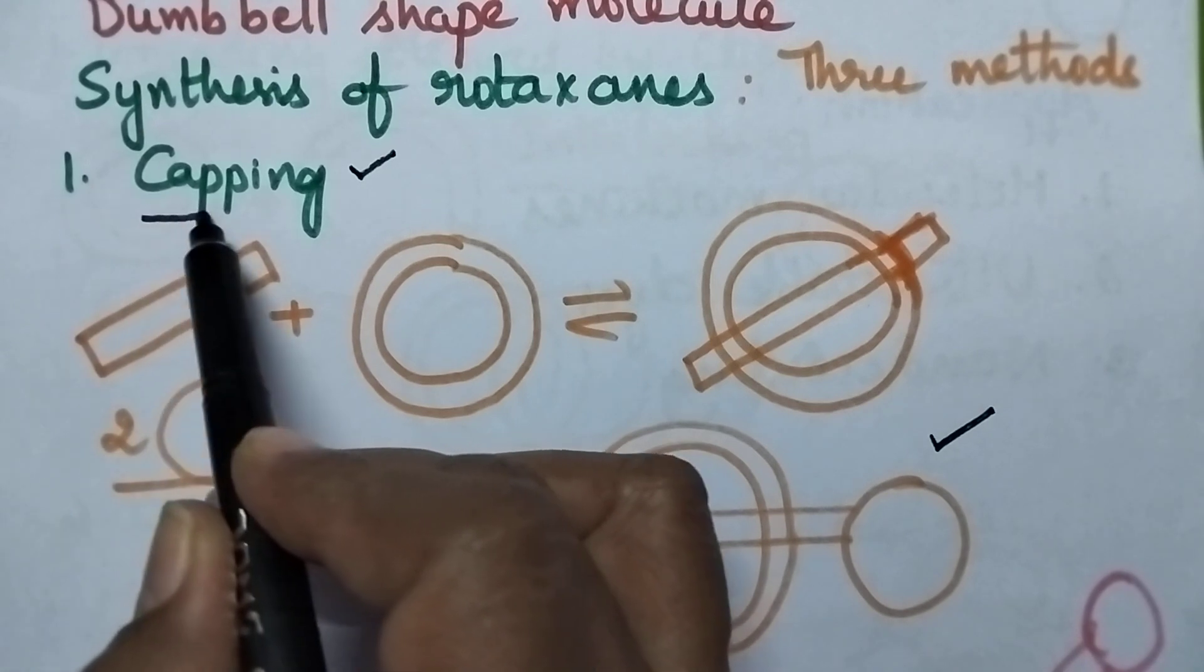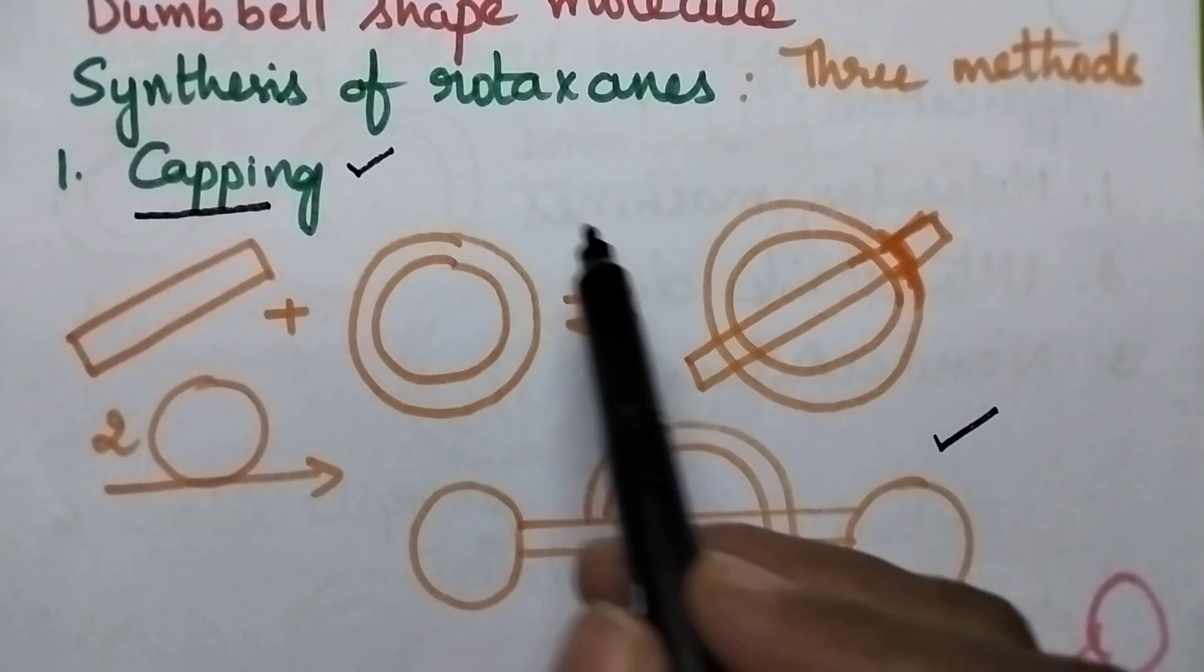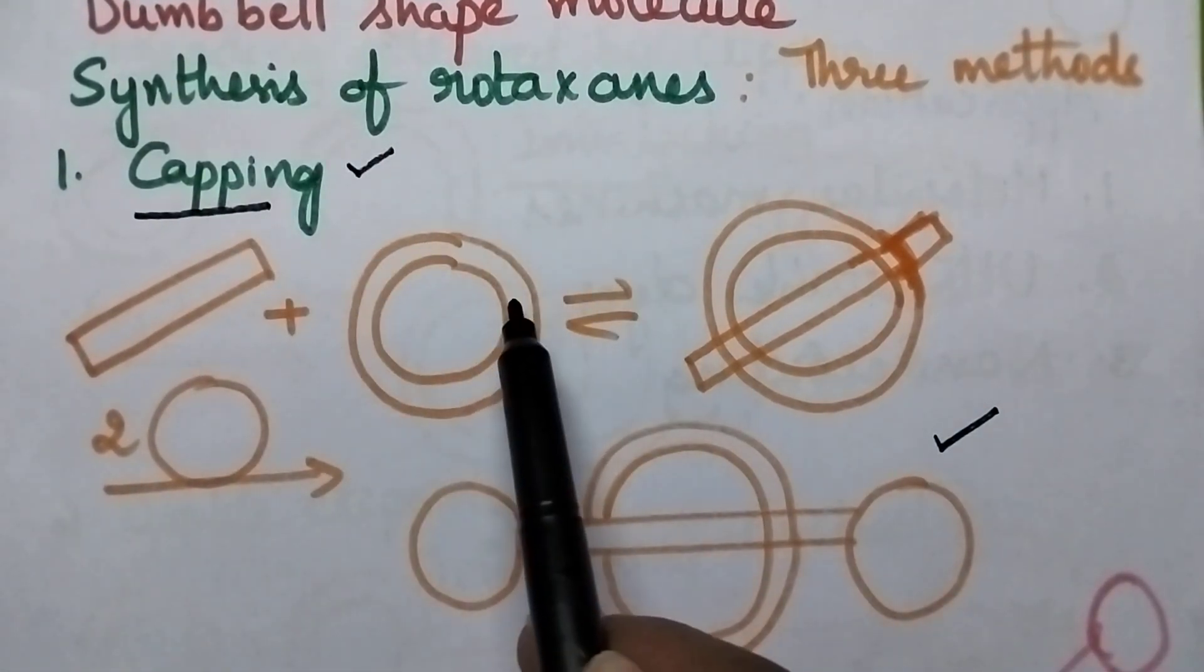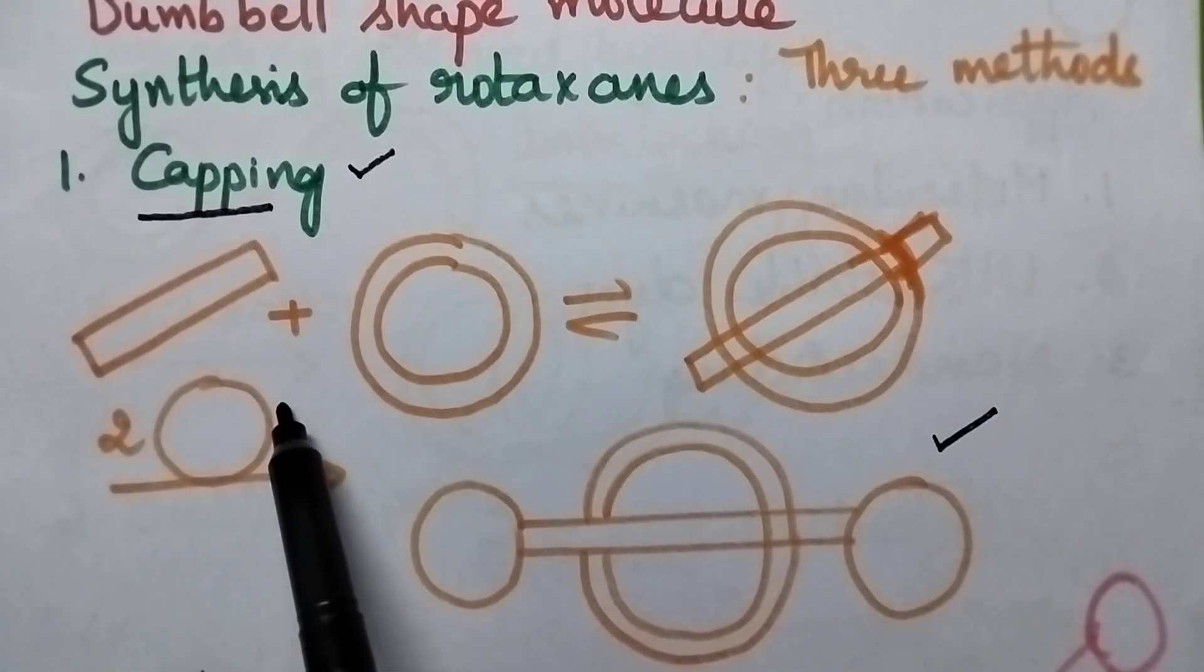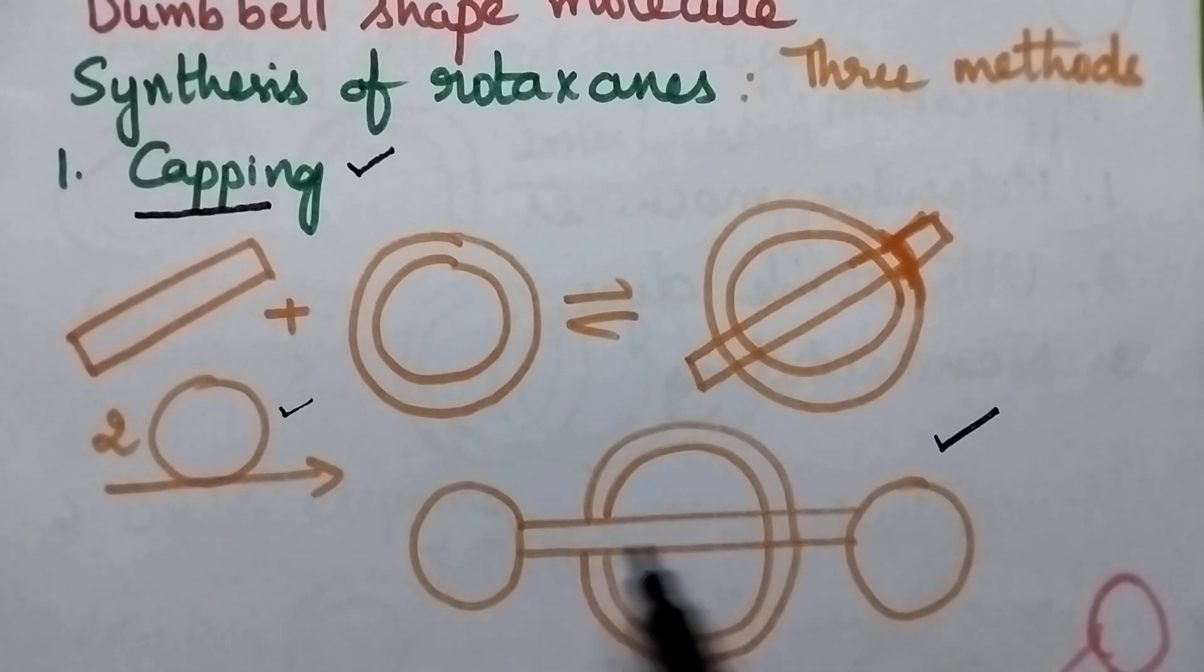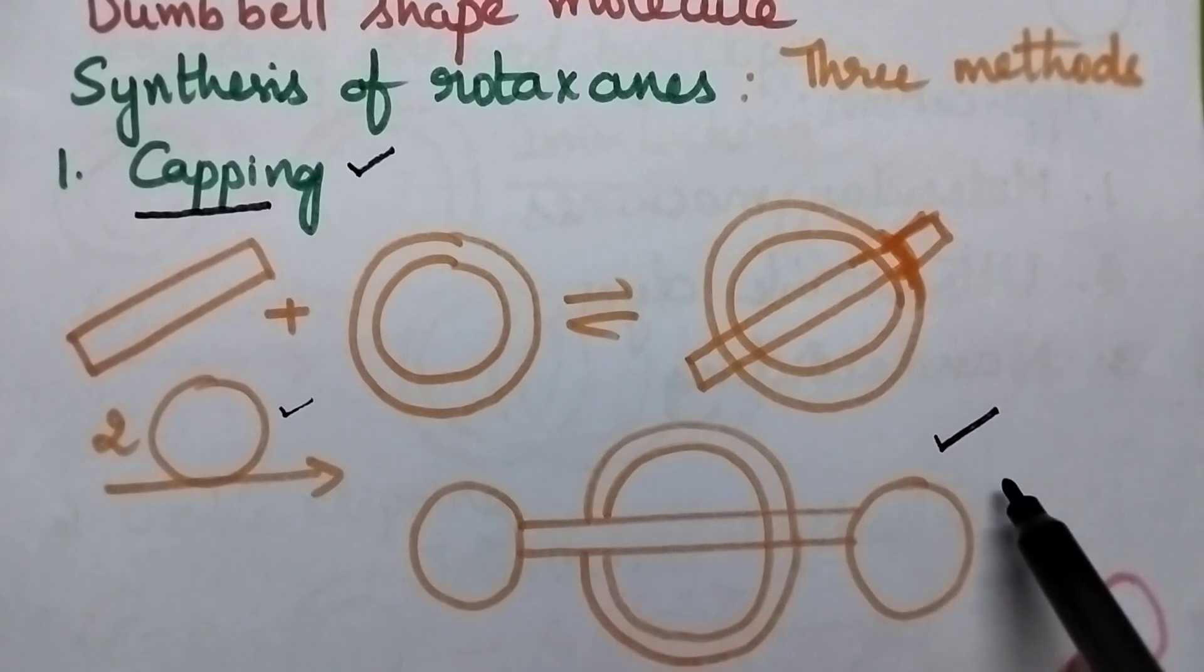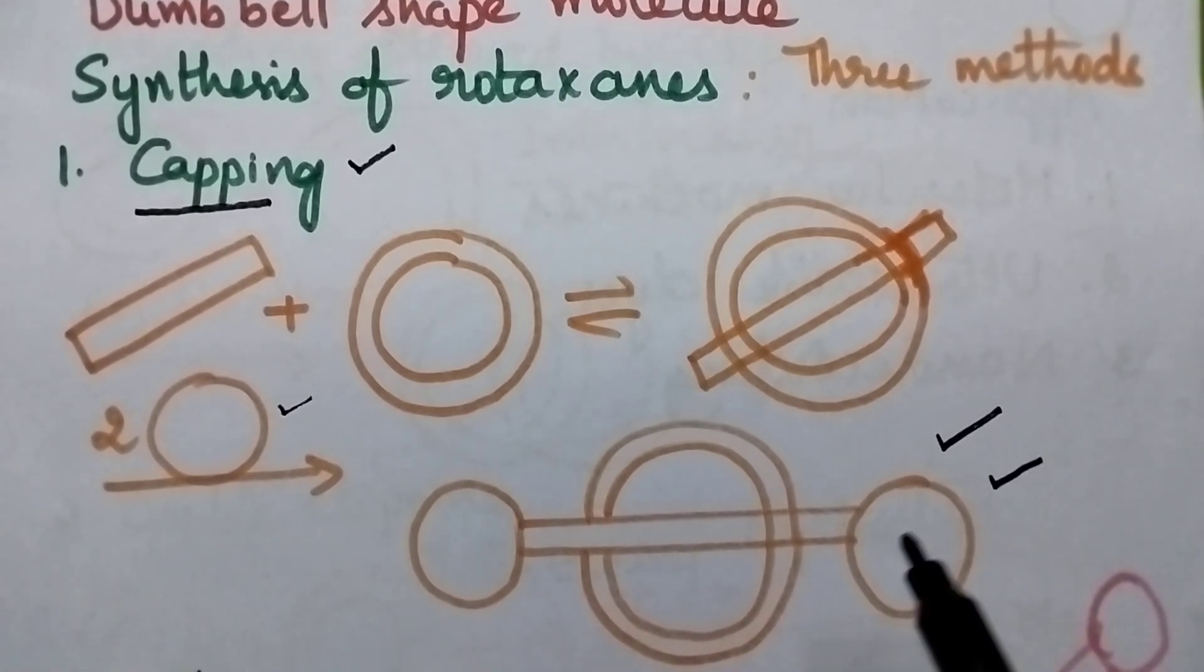Moving to the capping process, in this method initially the macrocycle is inserted into the shaft, and in the second step, the large groups are capped at the end of the shaft. Then it results in the formation of the rotaxane.